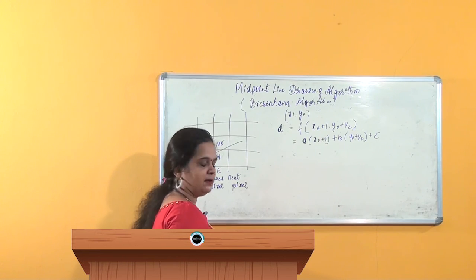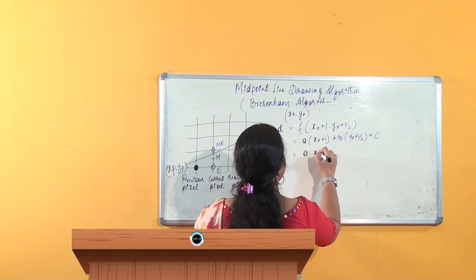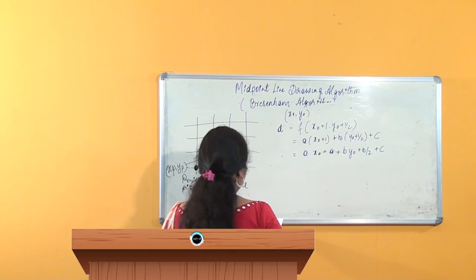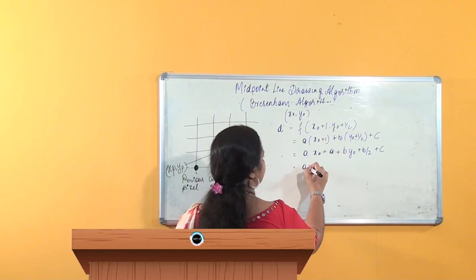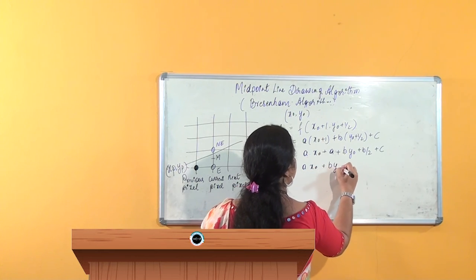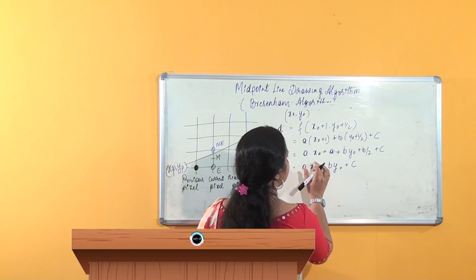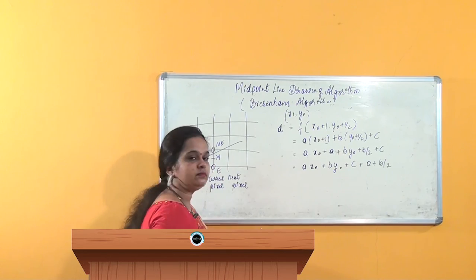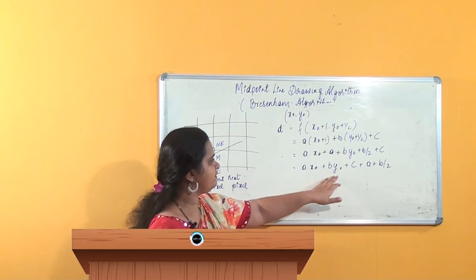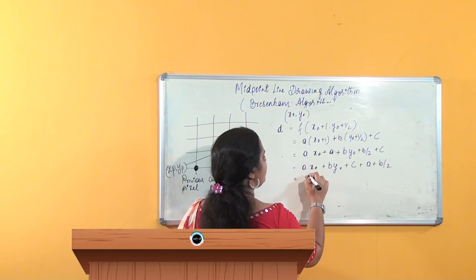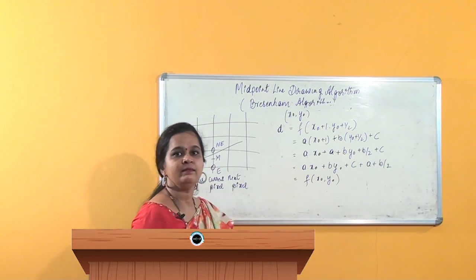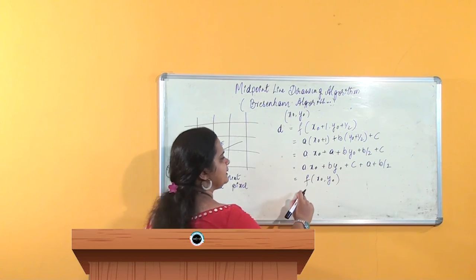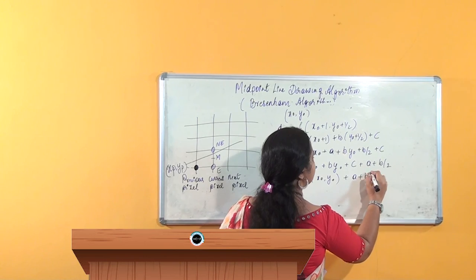Simplifying: a·x0 + a + b·y0 + b/2 + c. Grouping common terms, we get a·x0 + b·y0 + c, plus a + b/2 separately. Now a·x0 + b·y0 + c is exactly f(x0, y0) — the line equation evaluated at the starting point (x0, y0). So d_initial = f(x0, y0) + a + b/2.